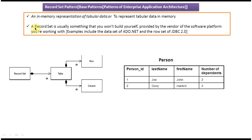A Record Set is usually something that you won't build yourself — it is provided by the vendor of the software platform you are working with. Examples include the DataSet of ADO.NET and the RowSet of JDBC 2.0.